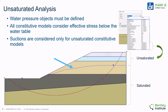Unsaturated analysis considers the effect of soil suctions on the shear strength of the soil above the water table. This type of analysis may be enabled in the software by defining two aspects in a model: first, water objects must be turned on and a zone of suctions must be defined; then, unsaturated constitutive models must be enabled in the regions above the water table. All constitutive models consider effective stress below the water table. Unsaturated constitutive models applied below the water table would not consider the unsaturated portion, only the saturated part.